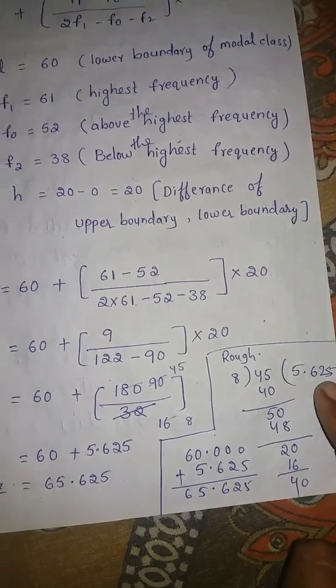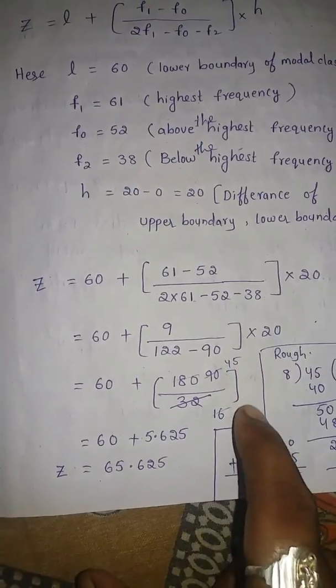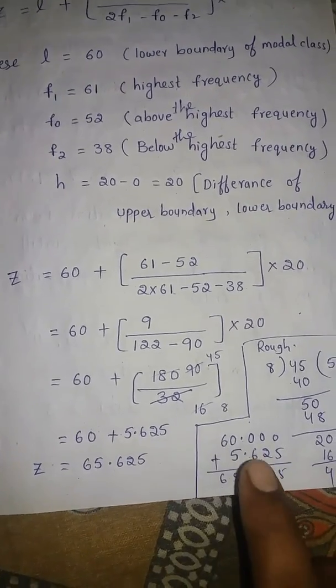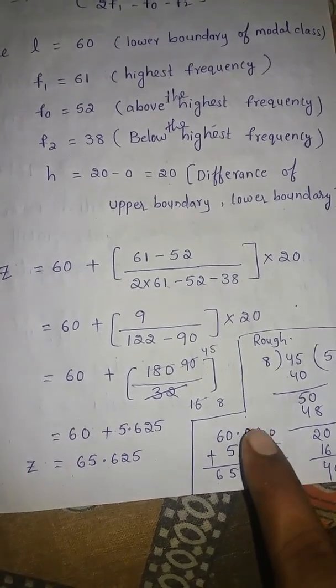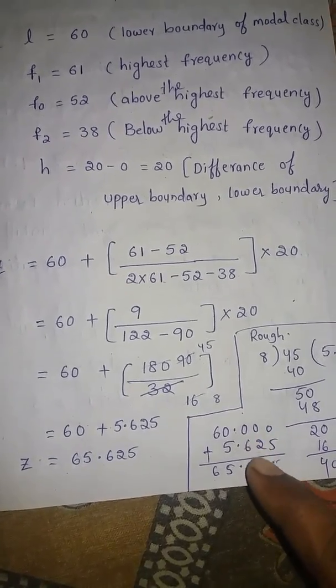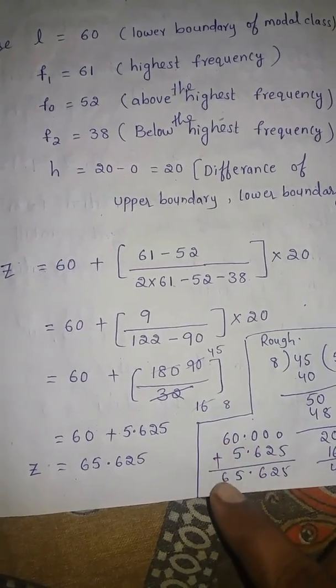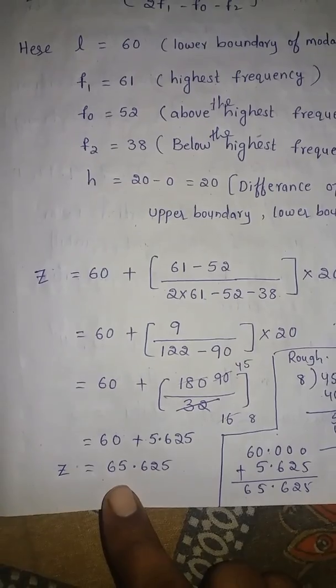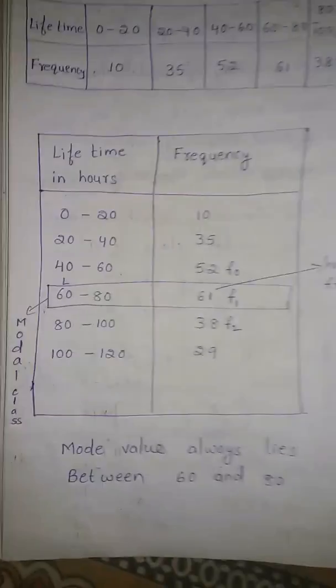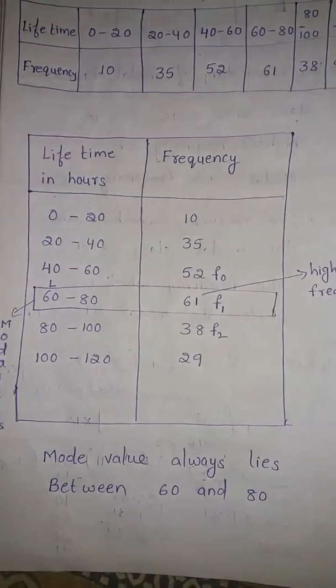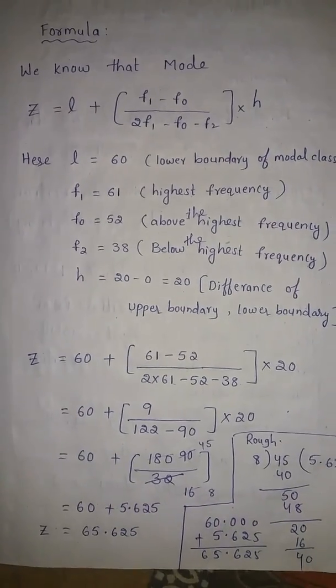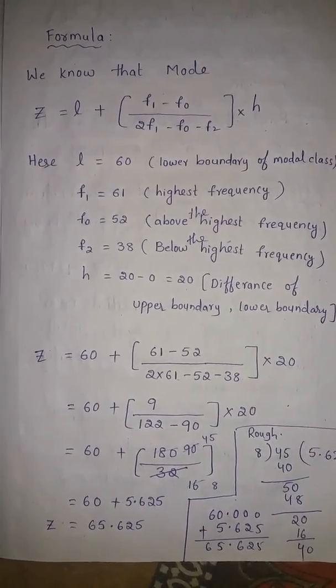5.625 the calculation of these two, 45 by 8 is 5.625. Add these two, 60 and 5.625. How to add? 60 after put a dot and keep three zeros, 5.625. Adding 0 plus 5 is 5, 0 plus 2 is 2, 0 plus 6 is 6, 0 plus 5 is 5, and 6, point is here, 65.625. The mode is 65.625.